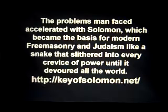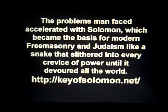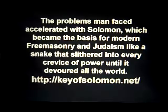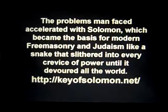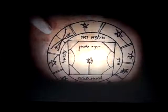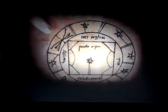The problems that man faced all accelerated with Solomon, which became the basis for modern Freemasonry and Judaism — like a snake that slithered into every crevice of power until it devoured all of the world. These are some illustrations where you can recognize the symbology of Freemasonry, starting with Solomon.